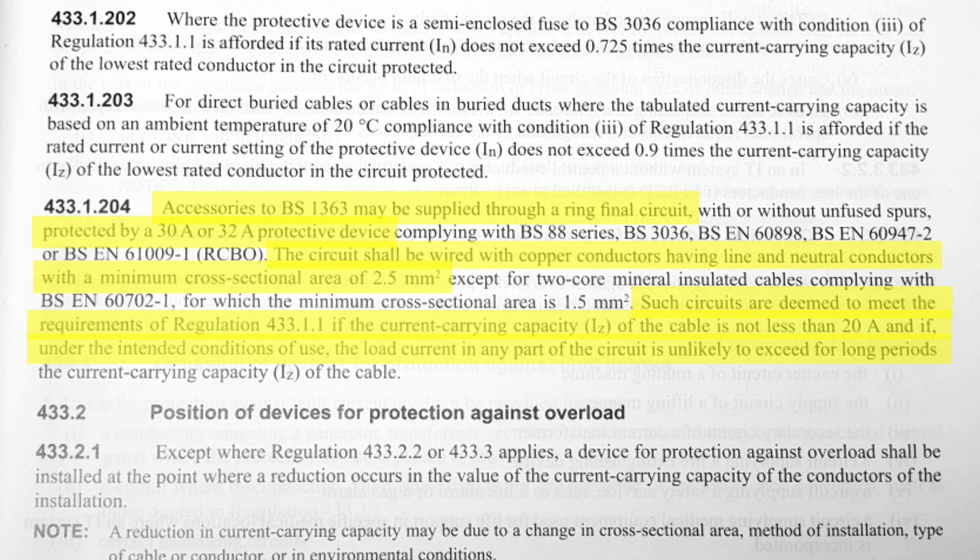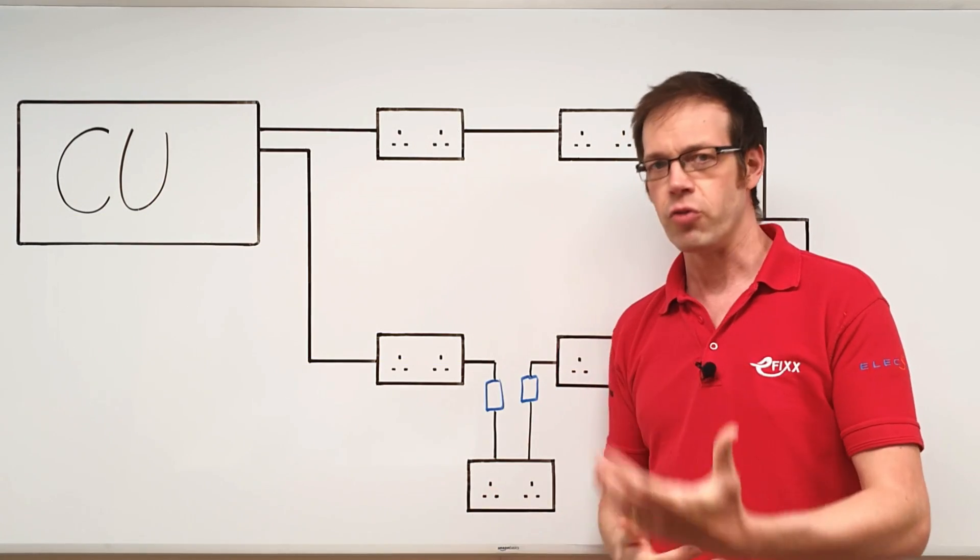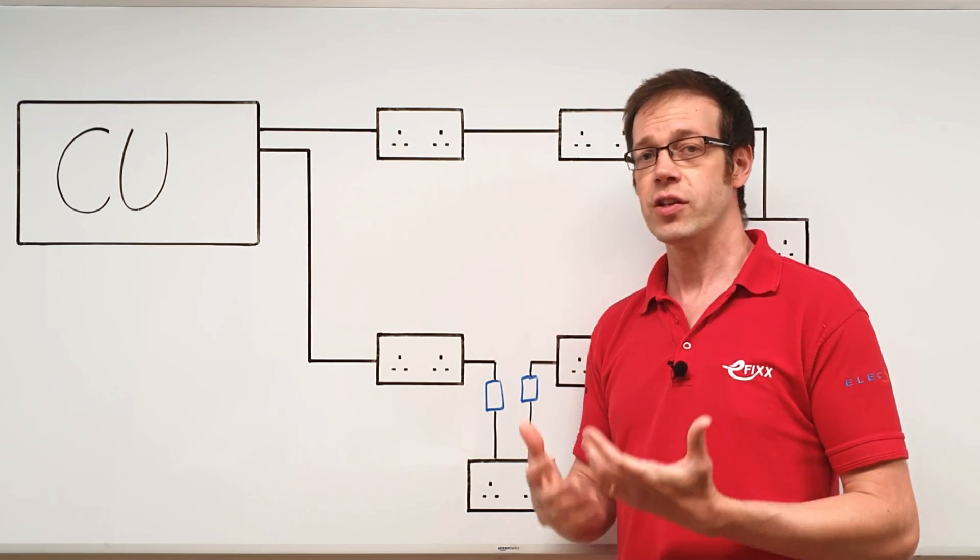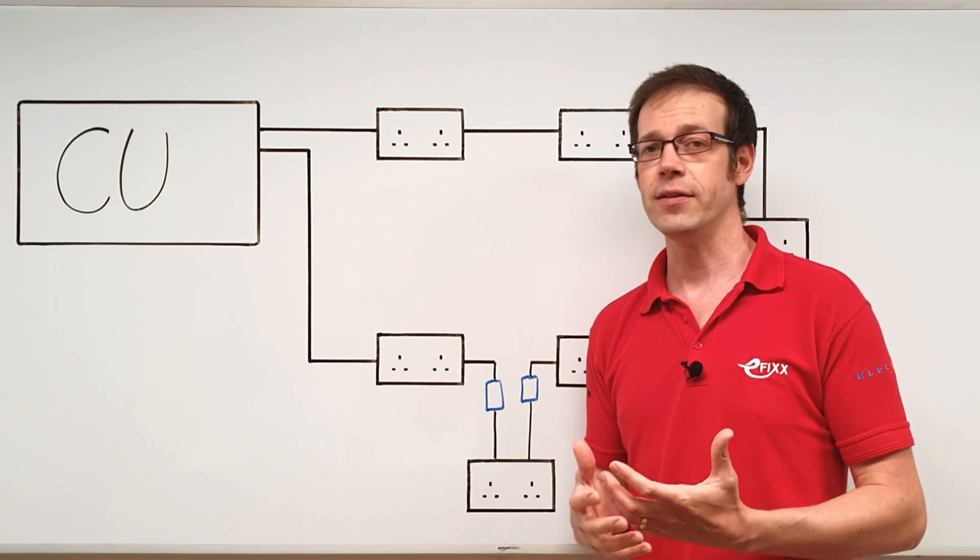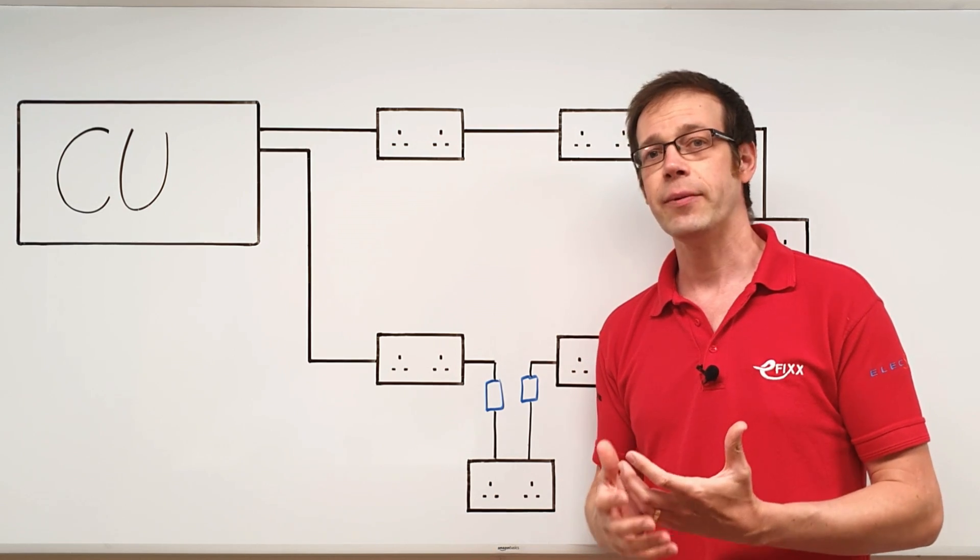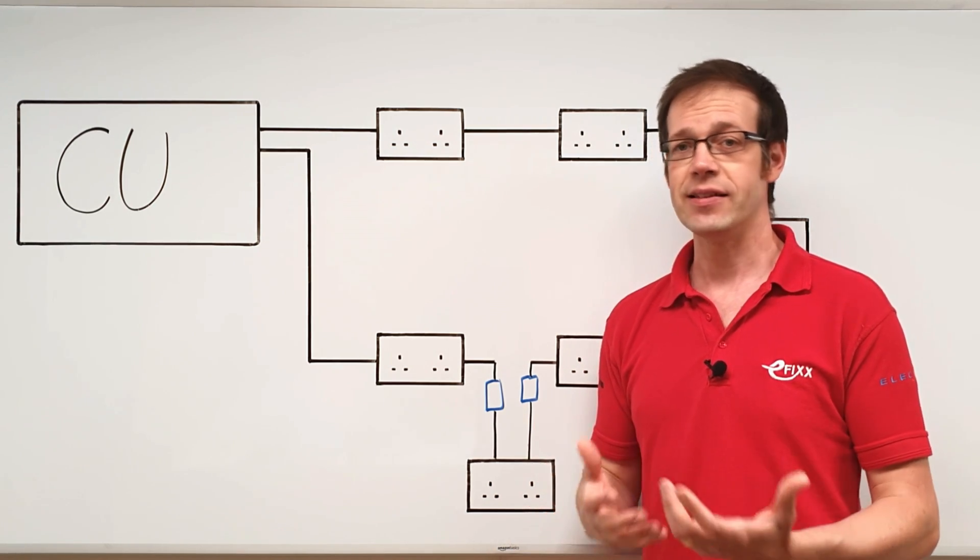So let's unravel that. What it's basically saying is that as long as the loading on the ring isn't expected to be ridiculously unbalanced, the cable needs to be able to carry at least 20 amps under normal conditions, as it's unlikely that the current flowing through any part of the ring will be higher than that.